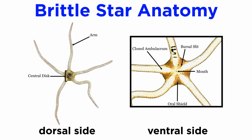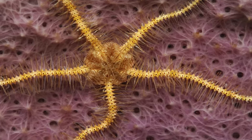Unlike the starfish, brittle stars have slender arms that are sharply set off from the central disc. They lack pedicellariae and papuli, and their ambulacral grooves are closed and covered in bony ossicles. They also have tube feet which lack suckers. So instead of tube feet for locomotion, they use their arms, which are made of a column of articulated ossicles, sometimes called vertebrae, which are connected by muscles and covered in plates.